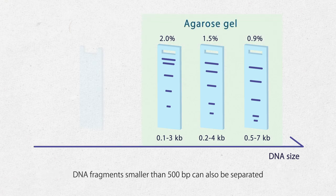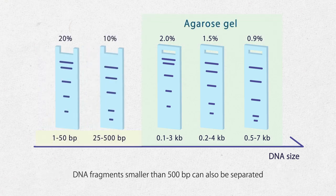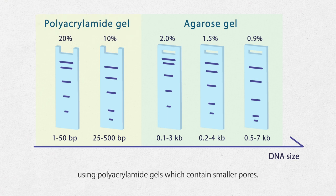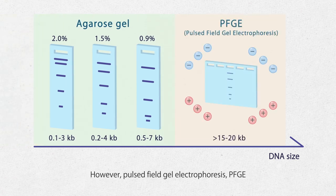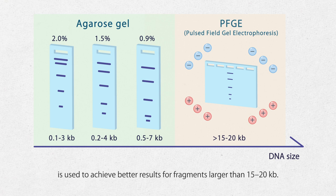DNA fragments smaller than 500 base pairs can also be separated using polyacrylamide gels which contain smaller pores. However, pulsed field gel electrophoresis, PFGE, is used to achieve better results for fragments larger than 15 to 20,000 base pairs.